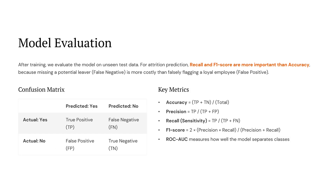Once the model is trained, it is time to test how well it performs on unseen data. For attrition prediction, we don't just focus on accuracy — recall and F1 score are actually more important. Why? Because missing a potential employee who might leave, a false negative, is more costly than wrongly flagging someone as leaving. We use the confusion matrix to understand predictions: true positives, false positives, false negatives, and true negatives. Key metrics like precision, recall, F1 score, and ROC AUC help us measure how accurate, balanced, and reliable our model really is.